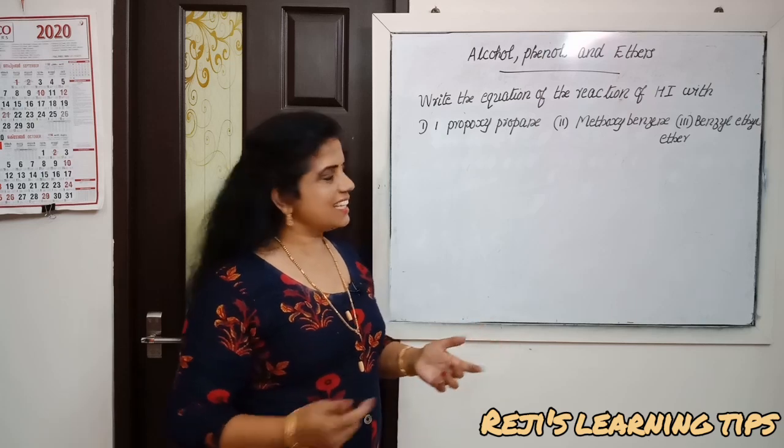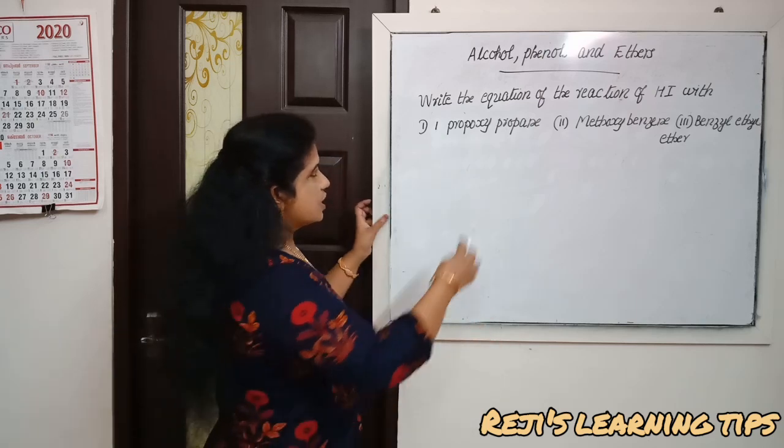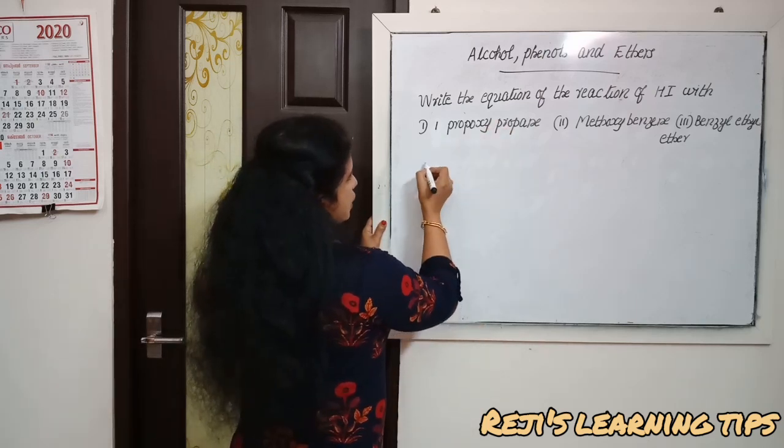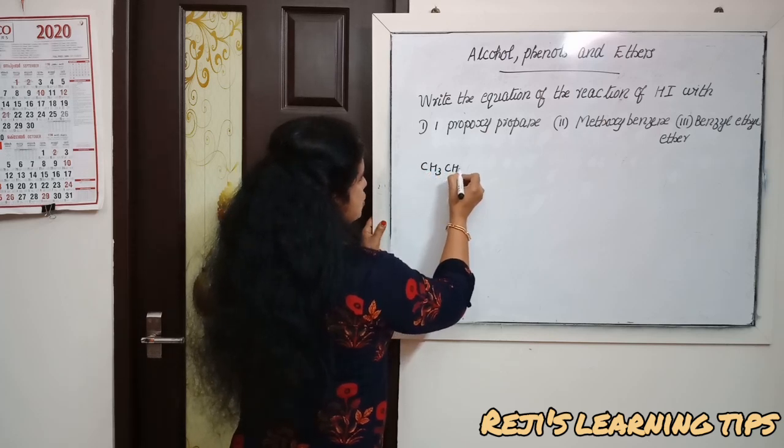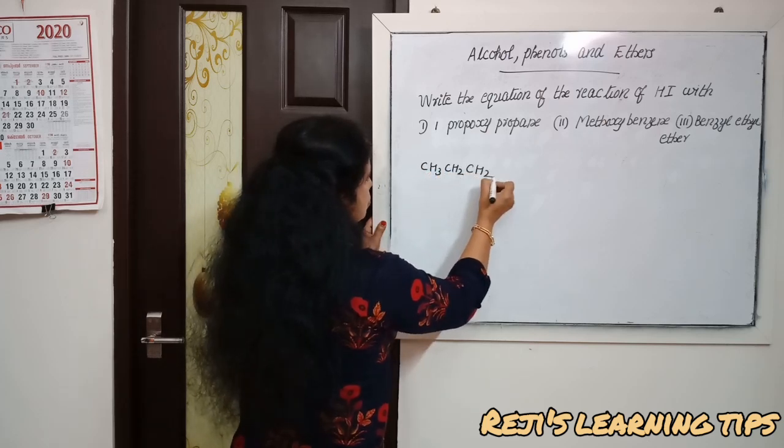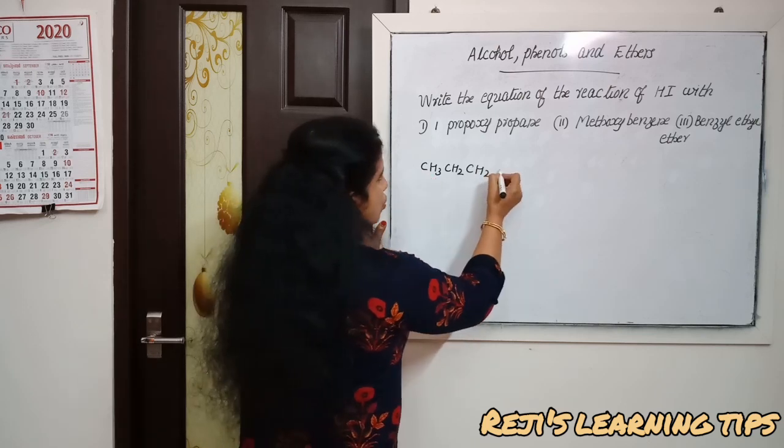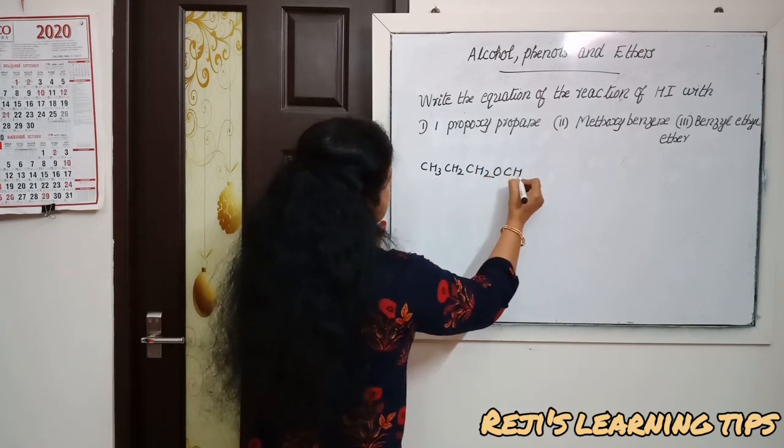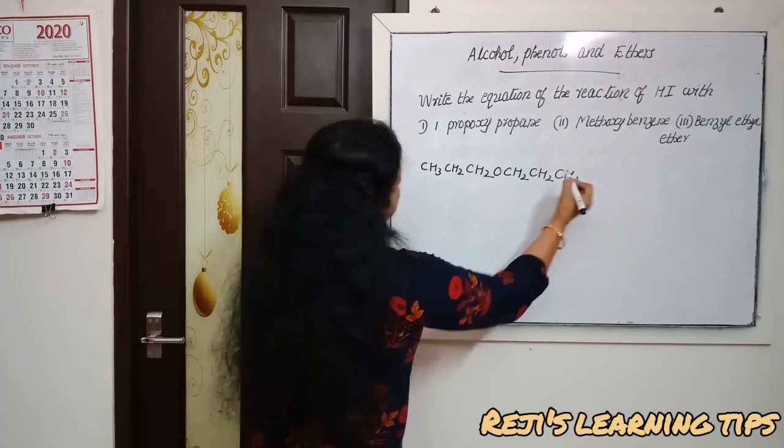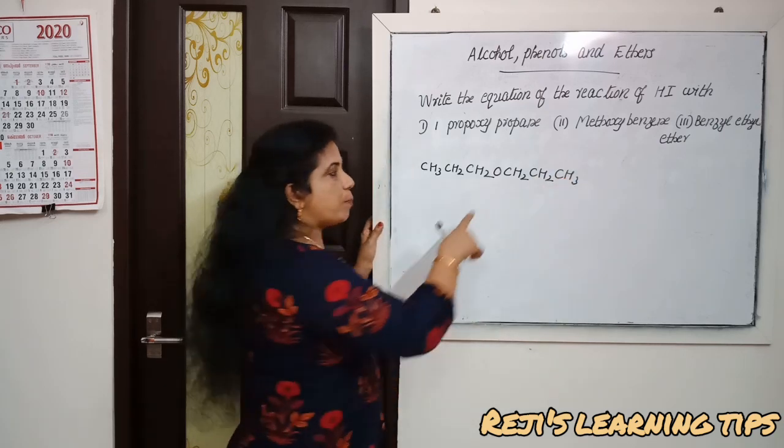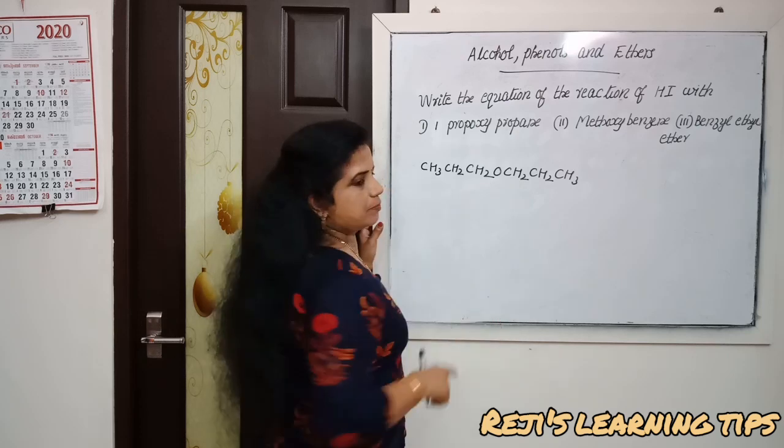Let us see the first one: 1-propoxy propane. The structure is CH3-CH2-CH2-O-CH2-CH2-CH3, one propoxy propane.